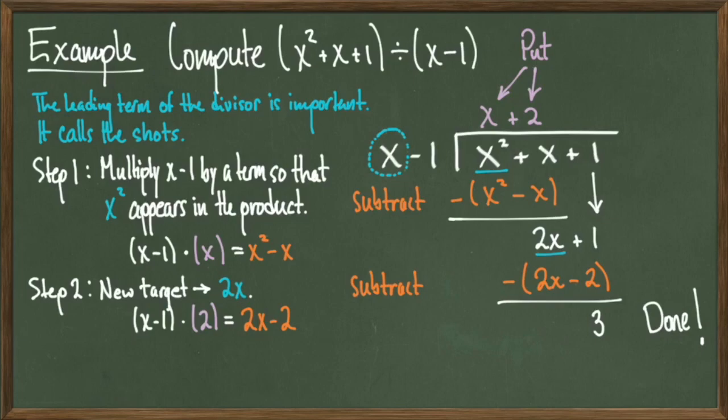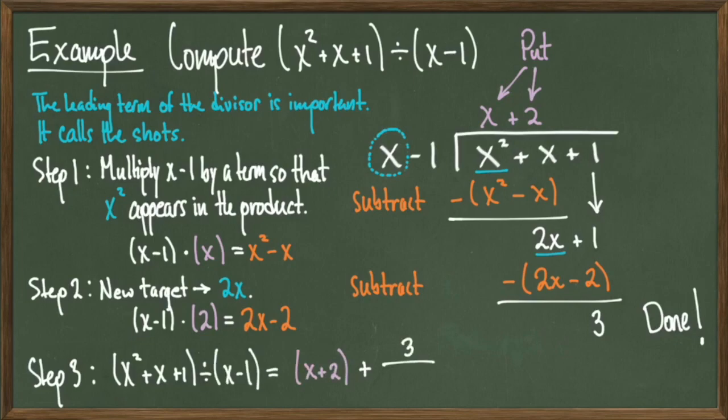The hard part is over, so all we have to do is read off our answer. We started with polynomials x squared plus x plus 1 and the divisor x minus 1. Then we produced the quotient x plus 2 and the remainder 3. Therefore, x squared plus x plus 1 divided by x minus 1 is equal to the quotient x plus 2 plus the remainder 3 divided by the divisor x minus 1. And we're done. Watch part 2 for more examples.